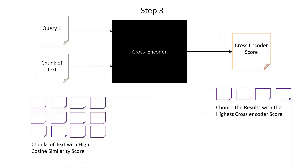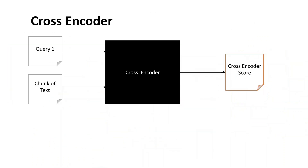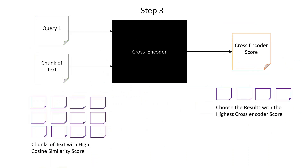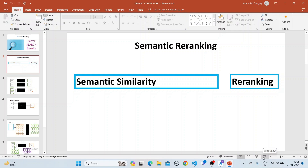In step three, we take the query and the 12 chunks with high cosine similarity scores and pass them to the cross encoder, which produces a cross encoder score. We then select the results with the highest cross encoder score — out of the 12 we choose only 4. This is a two-step process: semantic similarity followed by re-ranking. Let's jump into code and see it in action.